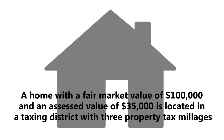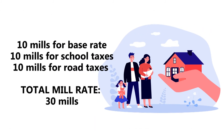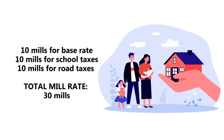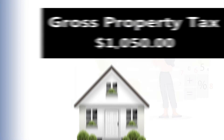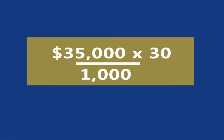Now, the assessed value times the mill rate divided by 1,000 equals the gross property tax. In our example, a home with a fair market value of $100,000 and an assessed value of $35,000 is located in a taxing district with three property tax millages: 10 mills for the base rate, 10 mills for school taxes, and 10 mills for road taxes — a total of 30 mills. Using the formula, the taxpayer owes a gross property tax of $1,050. That's $35,000 times 30 divided by 1,000, which equals $1,050.